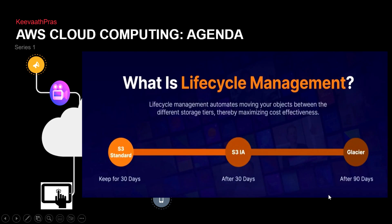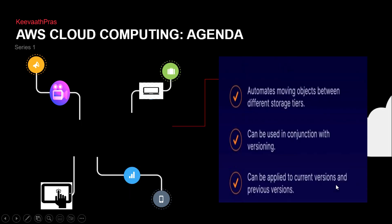Life cycle management, versioning, and console demo — I'll talk about it. S3 Standard: after 30 days move to Infrequently Access, after 90 days you can move it. That's an advantage — you can go from the first day to Infrequently Access.